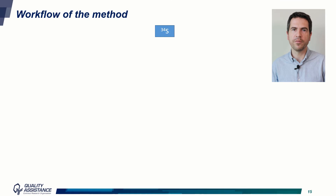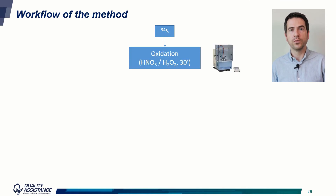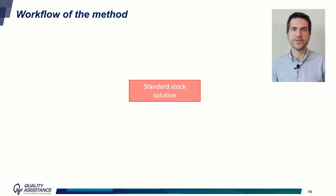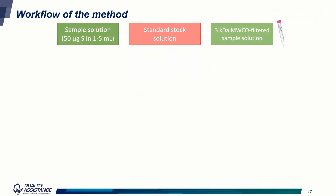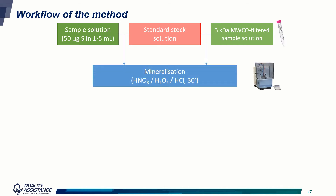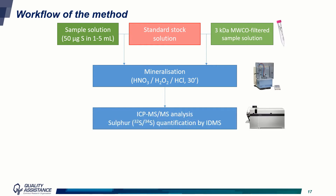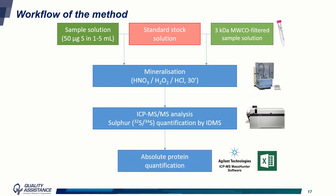Let's now have a look at the workflow of the method. First, we oxidized sulfur-34 with nitric acid and hydrogen peroxide in a microwave, and added a sulfur ICP standard — this gives our standard stock solution. Then we mix this solution with the sample solution, using 50 micrograms of sulfur in 1 to 5 milliliters. In parallel, we also filter a sample through a 3 kDa molecular weight cut-off membrane filter to measure the amount of sulfur present in the formulation that does not come from the protein. These samples are mineralized in a microwave system. The sample is then analyzed by ICP-MS to determine the isotopic ratio between sulfur-32 and sulfur-34, allowing calculation of the protein concentration in the initial sample.